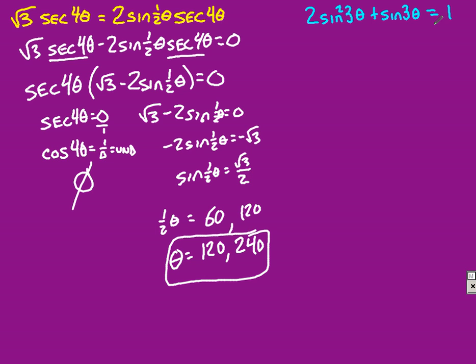Now, finish with the quadratic. Same thing, get everything on the same side. So, 2 sine squared of 3 theta, plus sine of 3 theta, minus 1, equals 0.